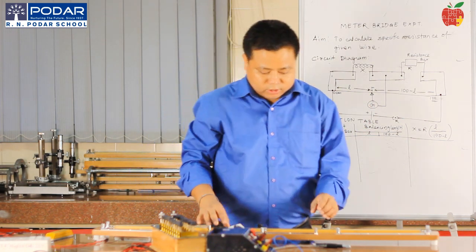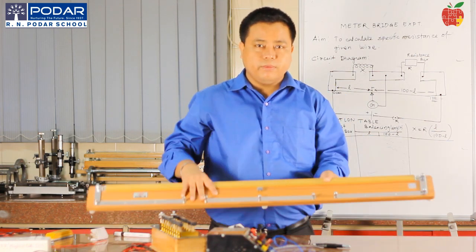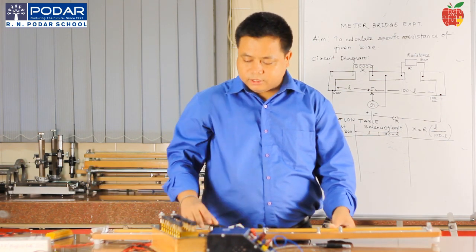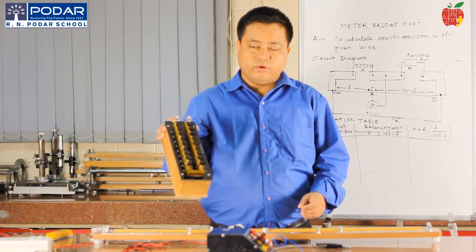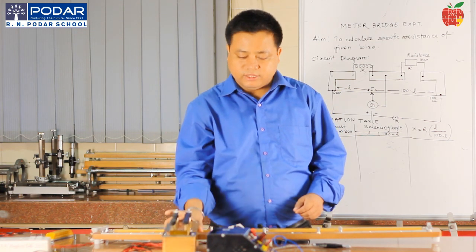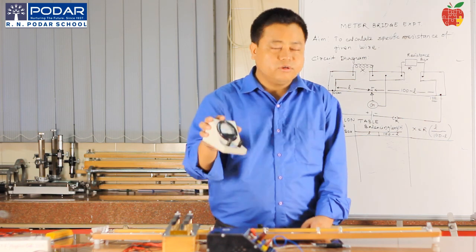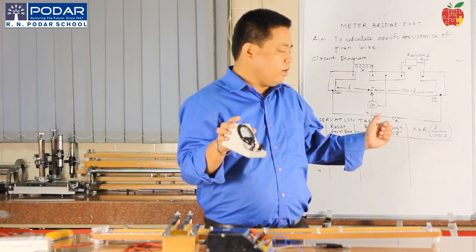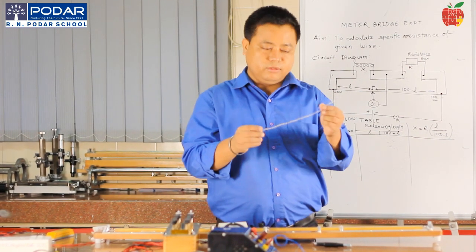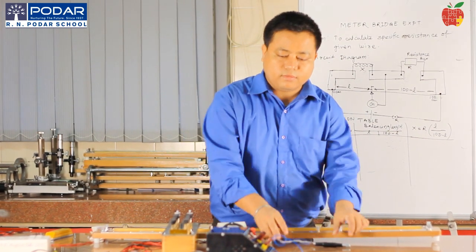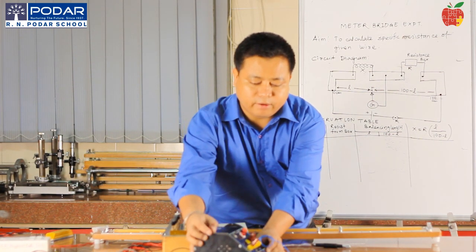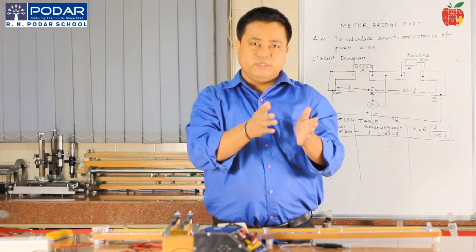I will just introduce the components. This is our meter bridge experiment setup, and this is the resistance box from which I will take out the unknown resistances. This is the galvanometer to get the null deflection, and this is the manganese wire. For the battery, we have taken a battery eliminator, which converts AC to DC.